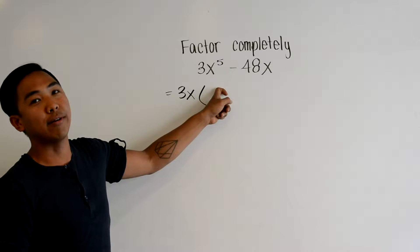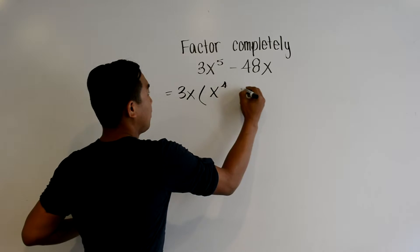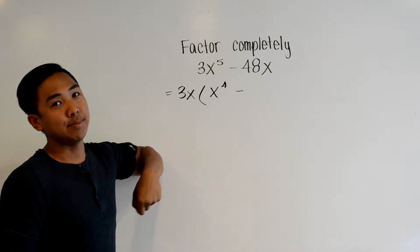Now 3x to the power 5 divided by 3x gets me x to the power 4, and 48x divided by 3x gets me 60.